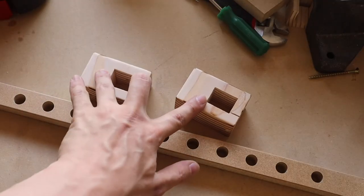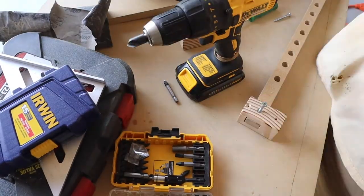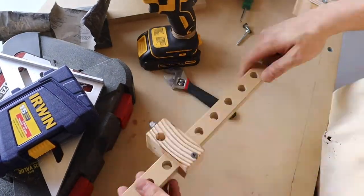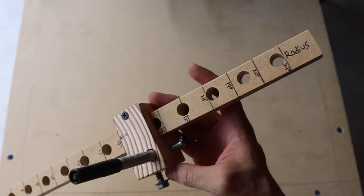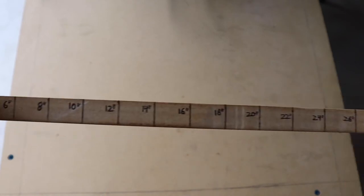I just sanded everything to a thousand grit. I also added markers, so this will be your radius marker at the top, and at the side is your diameter marker.